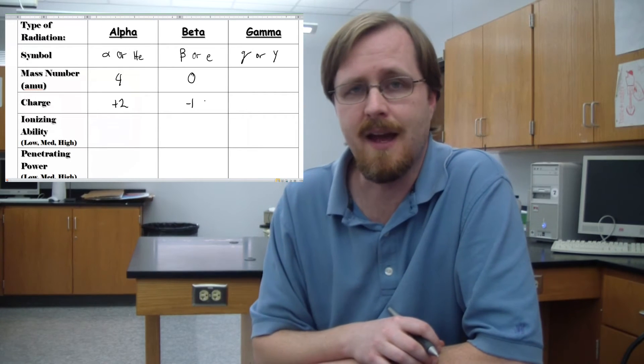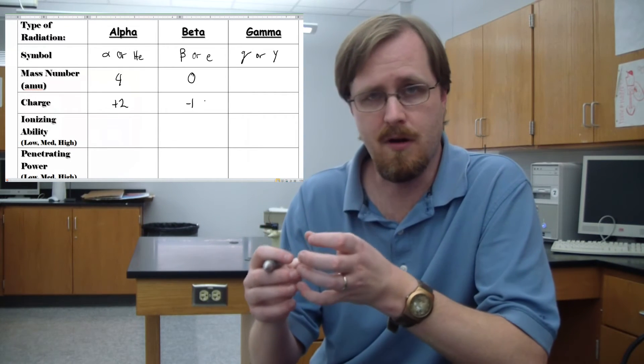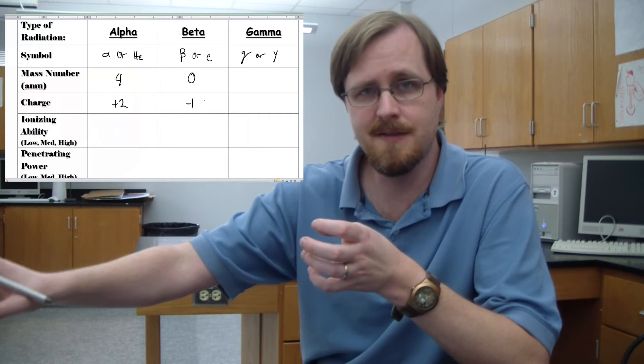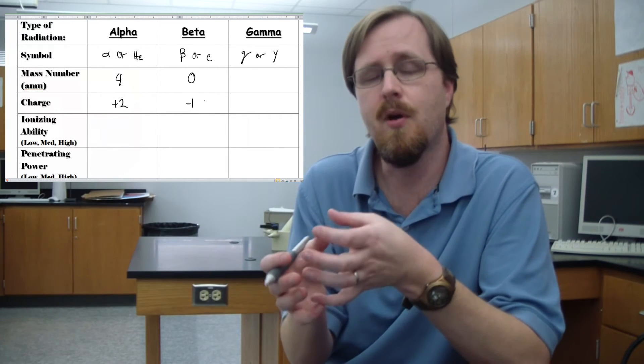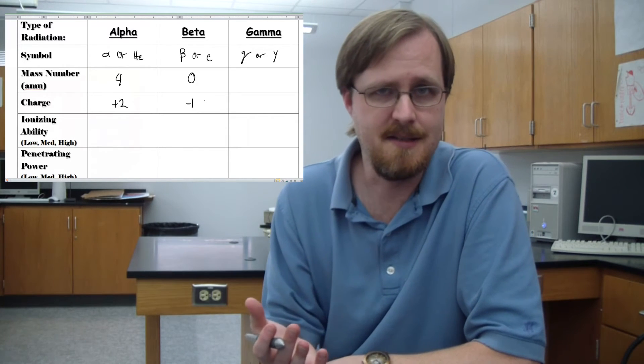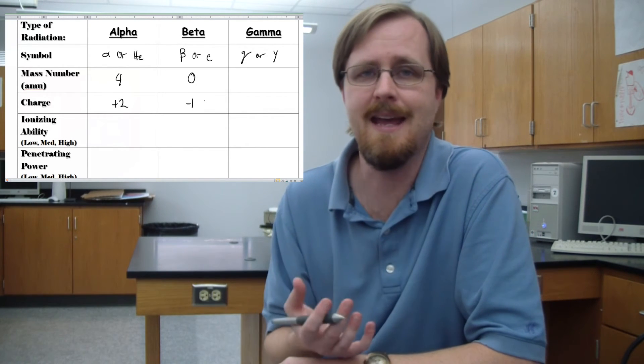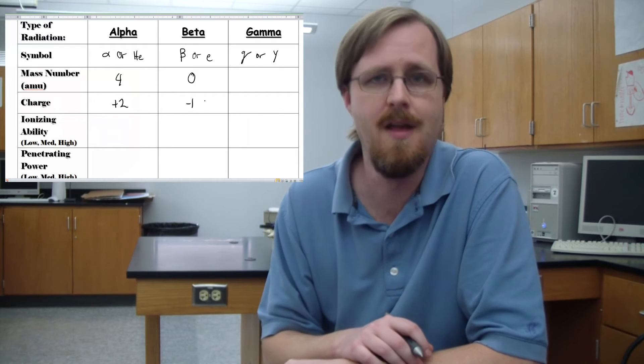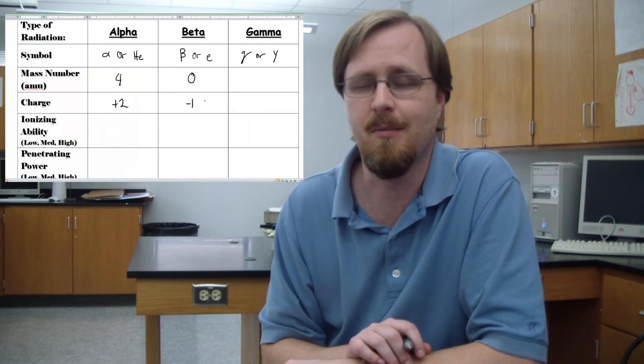So what happens in beta decay is that the electron from a neutron leaves the nucleus, leaving the proton behind. So the overall effect is that the mass stays the same, but the atom actually gains a proton, thus increasing the atomic number by one.